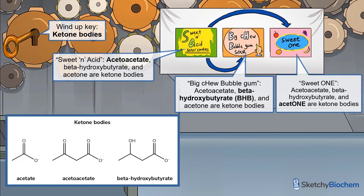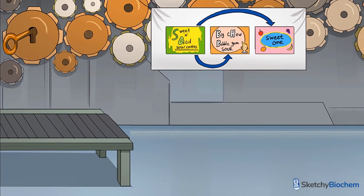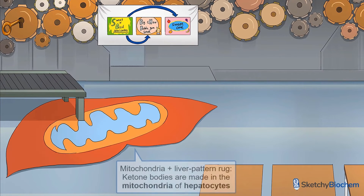The three main ketone bodies are acetoacetate, beta-hydroxybutyrate, and acetone. They're represented by the sweetened acid candy for acetoacetate, big chew bubblegum for beta-hydroxybutyrate, and acetone. That mitochondrion liver rug will remind you that ketone bodies are made in the mitochondria of hepatocytes.